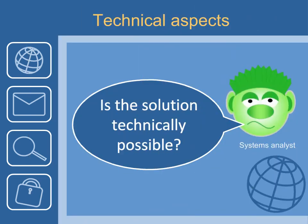The question says it all for this one: is the solution technically possible? There are all sorts of examples you could give. For instance, if somebody's looking for a particular disk drive of such a magnitude that doesn't exist, then it's not going to be possible. The notes mention a robot fitting into certain dimensions. The key question is: is it going to be possible technically to do this with the current technology that exists?